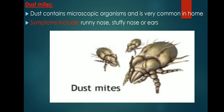Dust mite allergy: If you have allergies or asthma, a tiny creature living in your home could be making big problems for you. Although you cannot see them, you may be having an allergic reaction to them. These are dust mites, and they live in many homes throughout the world. Dust mites may be the most common trigger of year-round allergic and asthma symptoms. A dust mite measures only about one quarter to one third of a millimeter — too small to see with your eyes alone. Under a microscope, they look like white bugs. They have eight legs, so they are not insects but arthropods, like spiders.